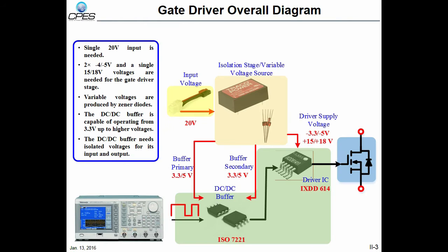This is the overall diagram of the gate driver used. For the gate drive part, a single 20-volt input is needed. By combination of an isolated DC-DC power supply and the combination of zener diodes with different voltages, the variable voltages required for gate driver stage are derived. It's worth mentioning that due to different gate-to-source voltages of the devices, we need variable gate voltage for all the devices under test. The incoming signal from a waveform generator is buffered by ISO 7221 DC-DC buffer, and then this driver used is IXDD614, which is a 14 ampere driver.